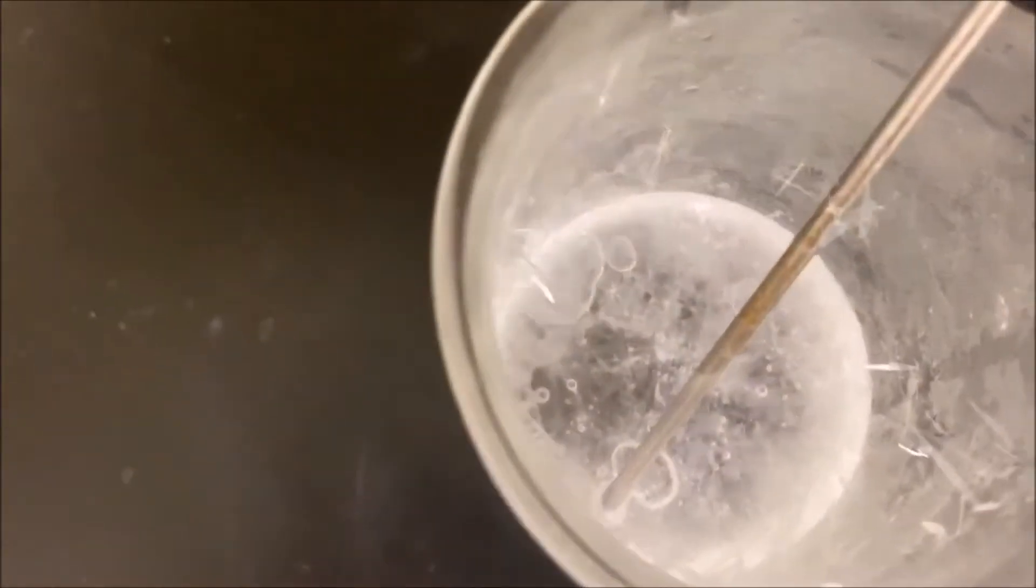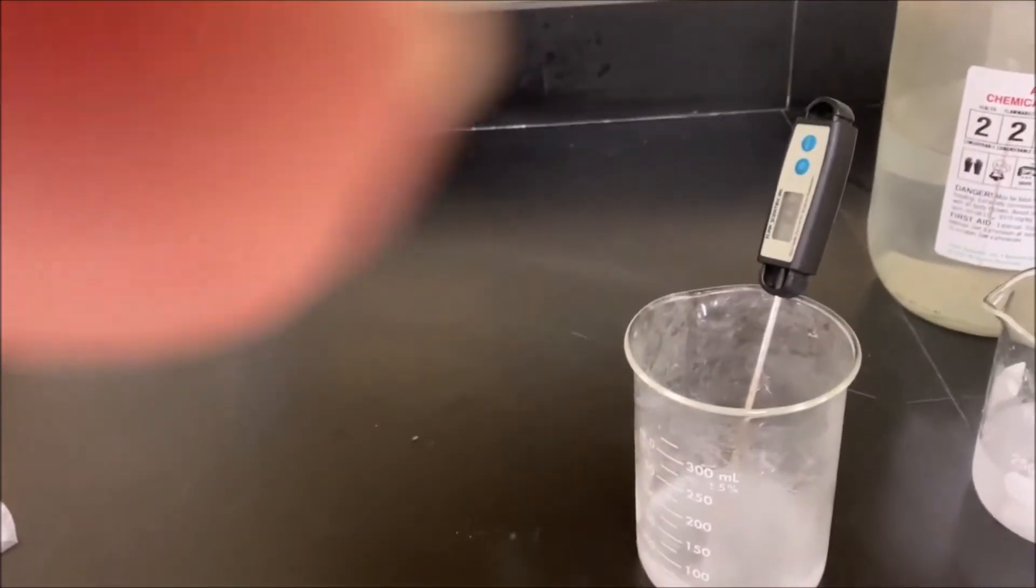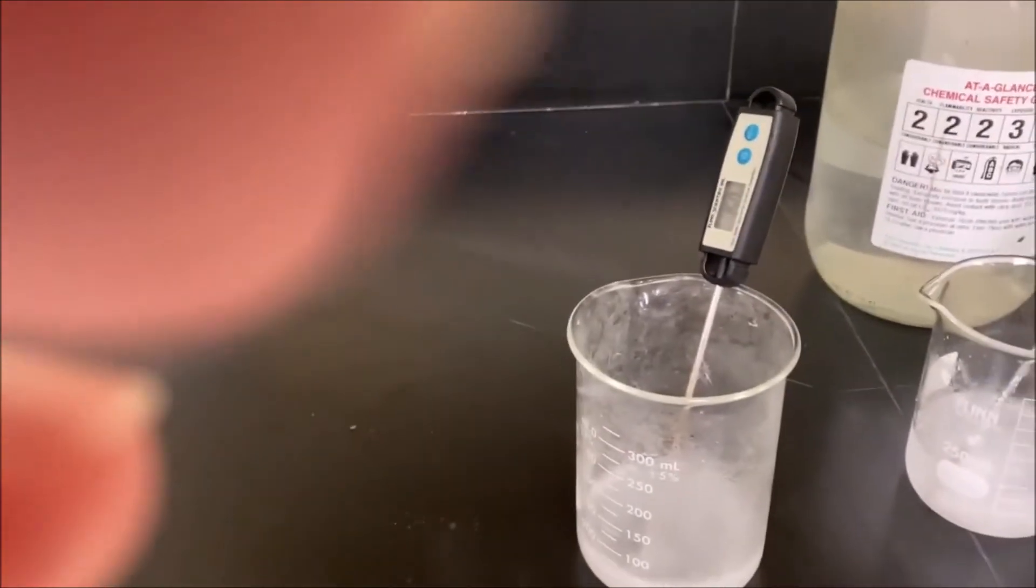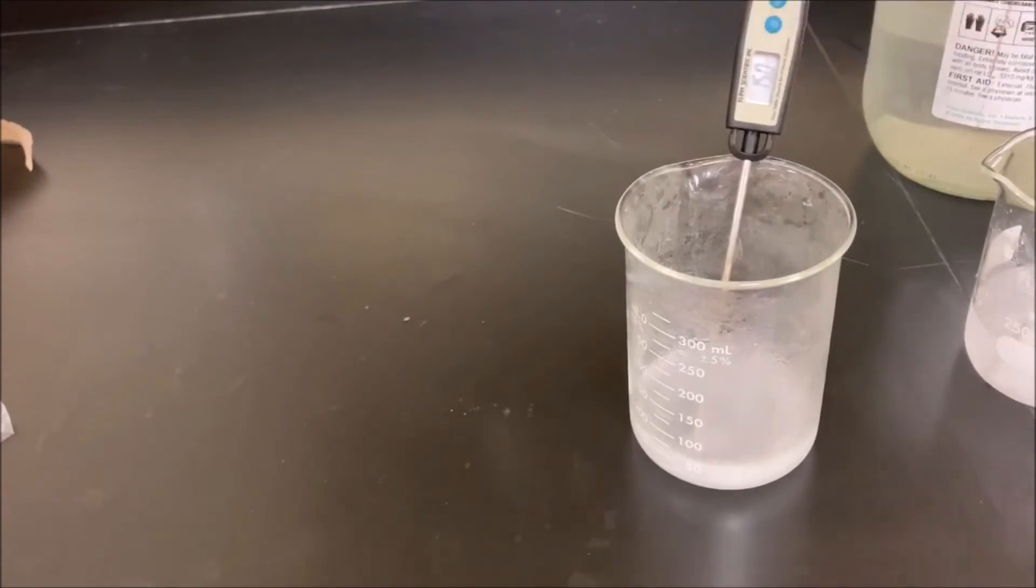But for this one we're going to go ahead and take that solid frozen acetic acid, glacial acetic acid, and this time we're going to add a solution of baking soda and see what happens. So currently that's starting to melt.